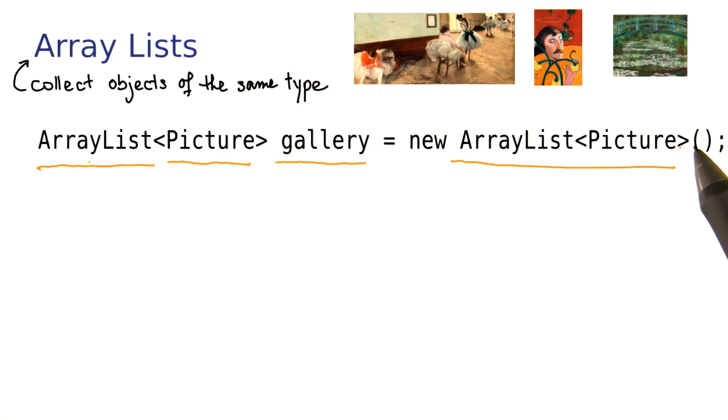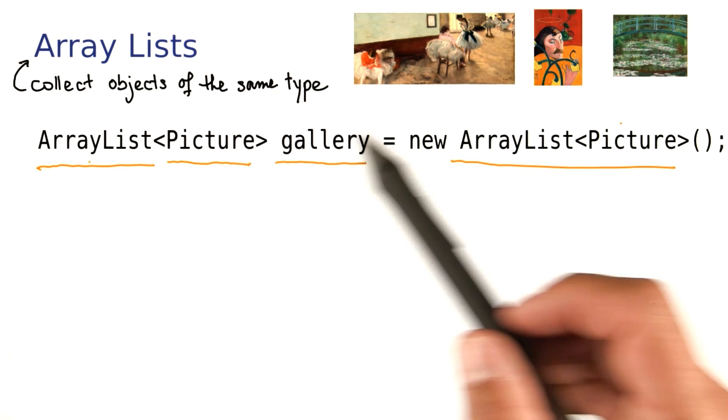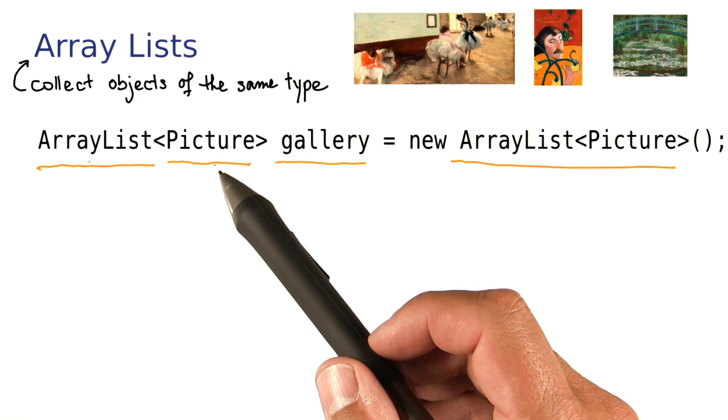What we get is an empty ArrayList, which can, as we add them in, hold as many pictures as we like.